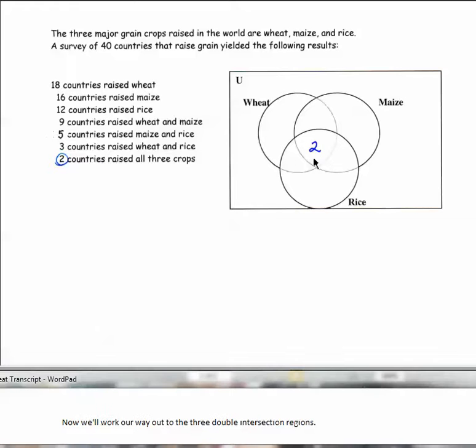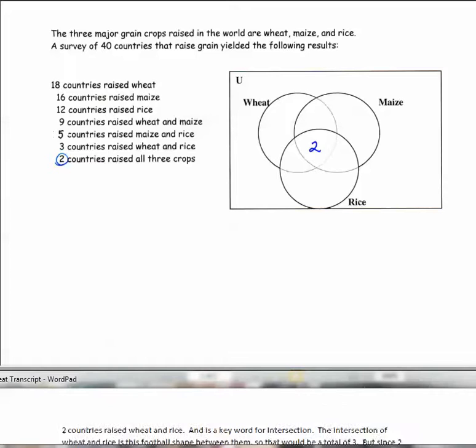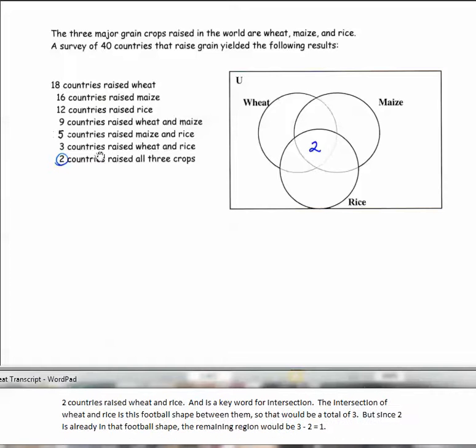Now we'll work our way out to the three double intersection regions. Three countries raised wheat and rice. And is a key word for intersection. The intersection of wheat and rice is this football shape between them. So that would be a total of three. But since two is already in the football shape, the remaining region would be 3 minus 2 equals 1.